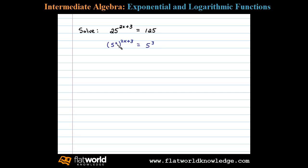Now we know when raising powers to powers, we multiply those exponents. So we can write 5 to the 4x plus 6 power equals 5 to the third power. Once we have the same base on both sides, we can apply the one-to-one property for exponential functions. In other words, we can equate these exponents.